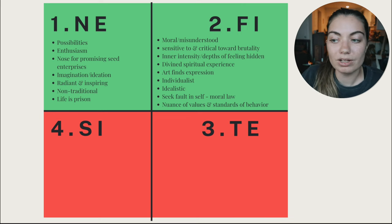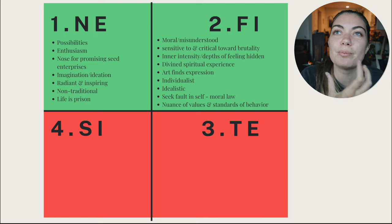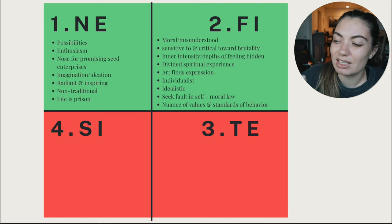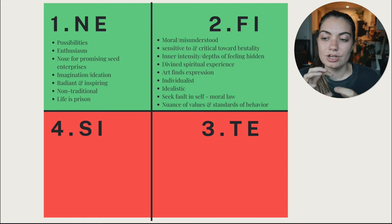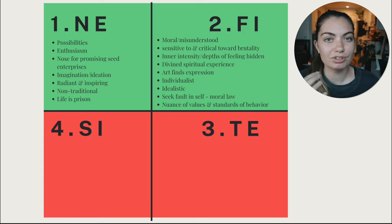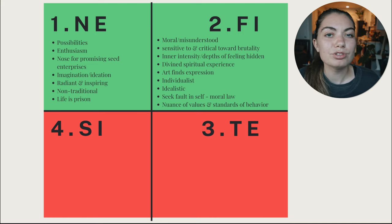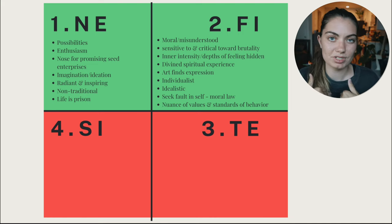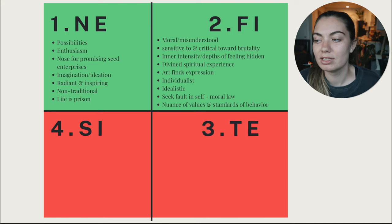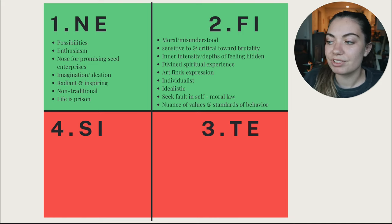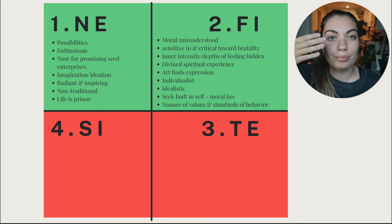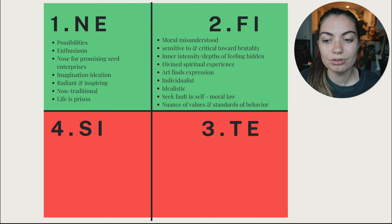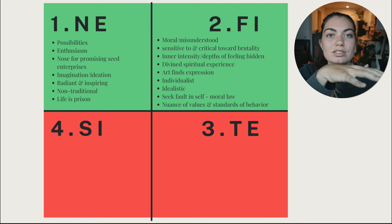Introverted feeling is sensitive to and critical toward brutality. If they see something they consider an injustice, they're very critical toward it. This creates an interesting paradox for the ENFP: extroverted intuition is described as merry and jolly, while introverted feeling involves depths of feeling and a tendency toward melancholia, sensitivity to the brutality of the world. ENFPs are outwardly merry to most people, but many have told me that everyone knows them as happy-go-lucky yet they carry a hidden sadness inside.